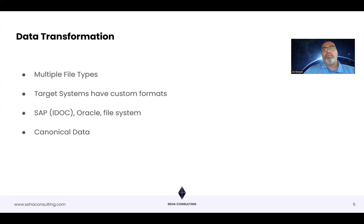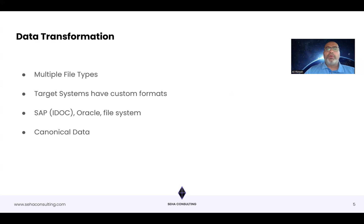Why do we do data transformation? When we're bringing in data from different sources, most use cases or problems you're trying to solve are going to involve getting data from multiple types of sources — multiple file types. Typically in a given project, you'll encounter multiple data sources. As a data integrator, your task is to combine all that data from different places and transform it into a target system. That's where most of the effort, resources, budget, and planning is involved.